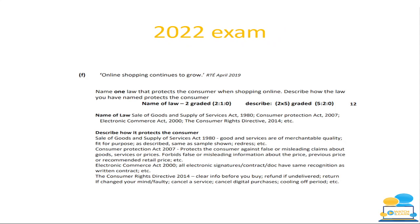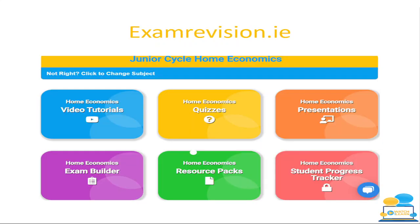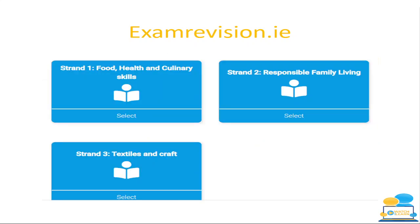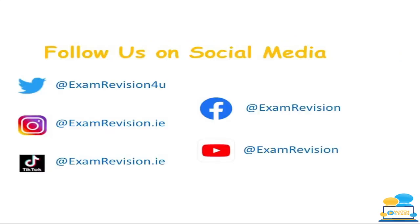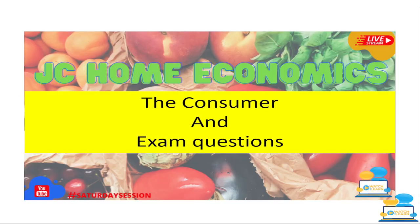Make sure to check out our exam revision website, examrevision.ie. The Junior Cycle Home Ec section has a selection of video tutorials, quizzes, presentations, an exam builder, resource packs, and a student progress tracker. It's divided into three key sections — today's content comes from the Responsible Family Living section. Under each chapter there's a PowerPoint, a video of me teaching it in 10 minutes or less that you can pause and rewind, self-correcting quizzes, and past exam questions. Follow us on social media — Saturday sessions are uploaded every Saturday. Thank you for coming today and listening to the Junior Cycle Home Economics Saturday session with Amy Cowan, where we looked at the consumer and exam questions.